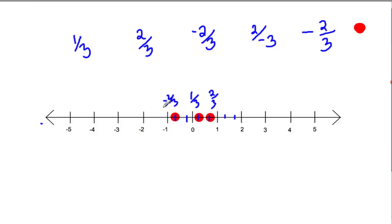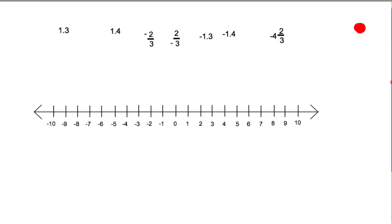And here we see some more of the same. Negative 2 thirds and 2 over negative 3. Those are the same, so we're going to go over those again. Negative 4 and 2 thirds. Let's go over that one. So here's 0, here's negative 1, negative 2, negative 3, negative 4, and 2 thirds. So I picture those hash marks. It's going to be about here, and then I label it negative 4 and 2 thirds.